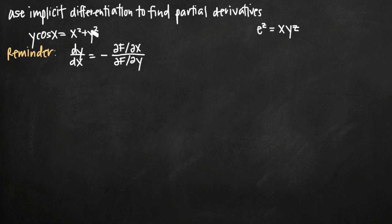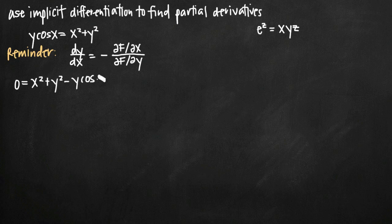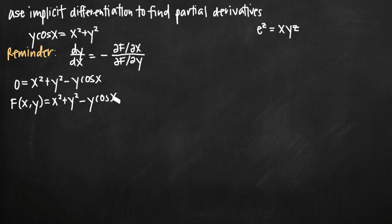Let's start with the simpler case where we just have two variables. The first thing we want to do is move all of the terms to one side, setting it equal to zero. So we subtract y cosine x from both sides to get zero equals x squared plus y squared minus y cosine of x. Now we can call this function capital F of x, y equals x squared plus y squared minus y cosine x.